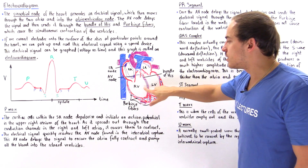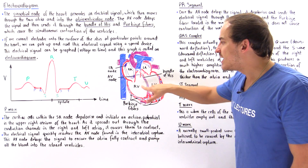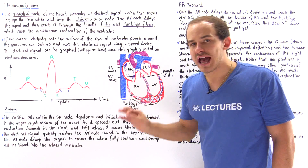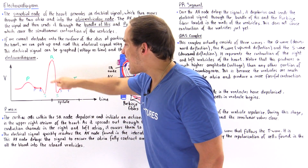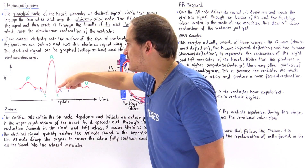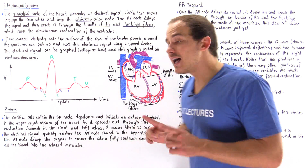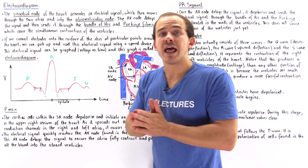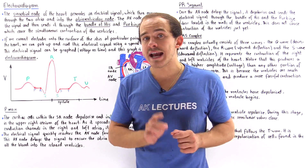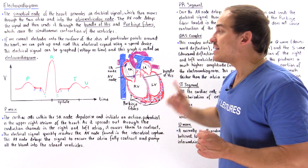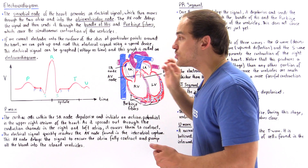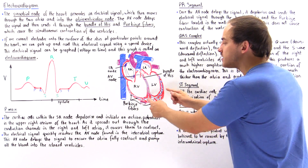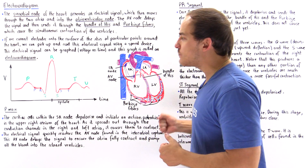This is when the ventricles begin to contract, the valves close, and the right and left atria are now relaxing. The voltage difference in the QRS is so high because the ventricles contain the thickest layer of myocardium — the thickest layer of muscle cells — requiring a much higher voltage to cause contraction of all those muscles. That is exactly why the R peak is such a high peak.